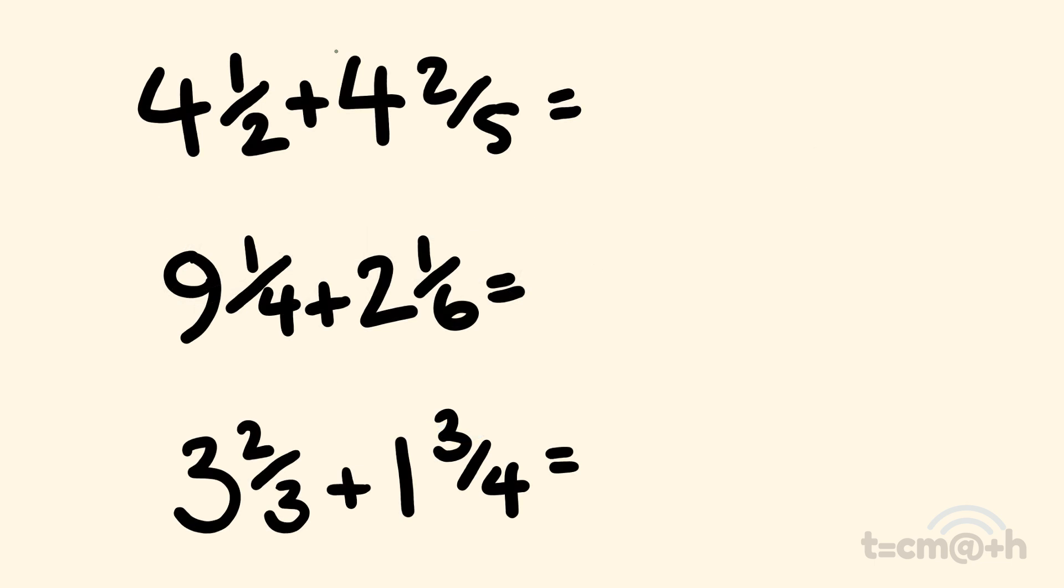So what about three of these that you can do right now? We have three questions here. They get progressively harder as we go along. We have four and a half plus four and two fifths. Next, we have nine and a quarter plus two and one sixth. And finally, three and two thirds plus one and three quarters. So pause the video and give these a go.